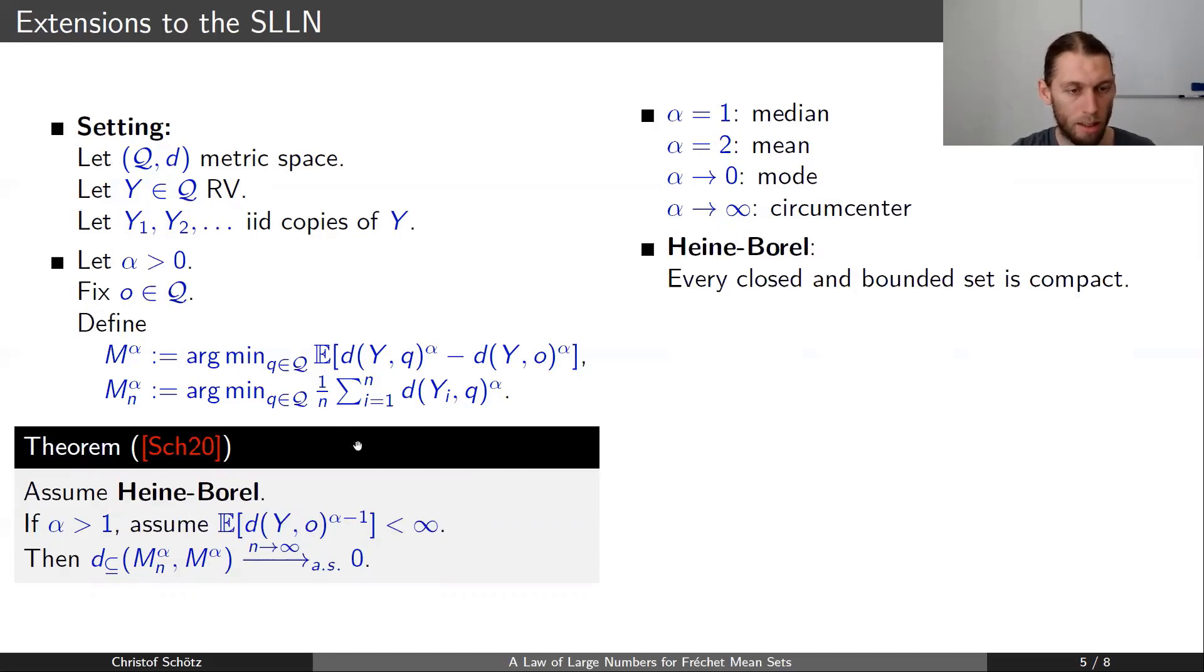With this we can generalize the result on the previous slide. As we now assume a Heine-Borel condition, and for alpha greater than 0 we require a moment condition of the order of alpha. And then we have again the subset distance convergence almost surely. This also means that for the Fréchet median where alpha equals 1, we do not require a moment condition.